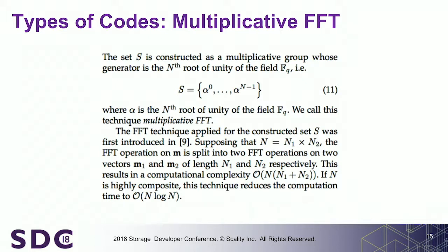The condition to apply this FFT is that the cardinality of the field set, if it can be expressed as a product of two numbers, allows you to reduce the problem recursively. If you choose a highly composite number for N — especially a hyper-composite number — you can reduce the complexity to N log N instead of N squared.